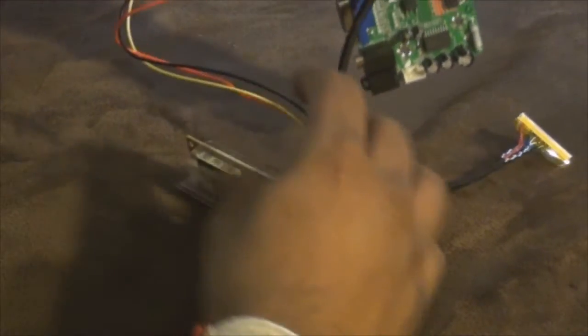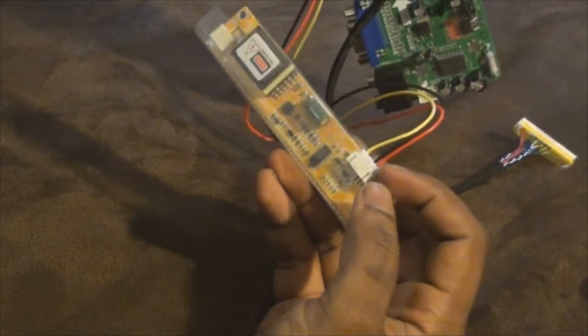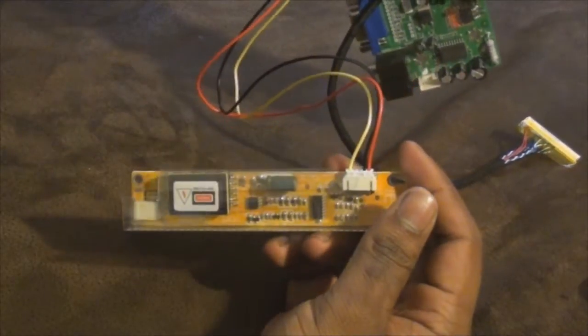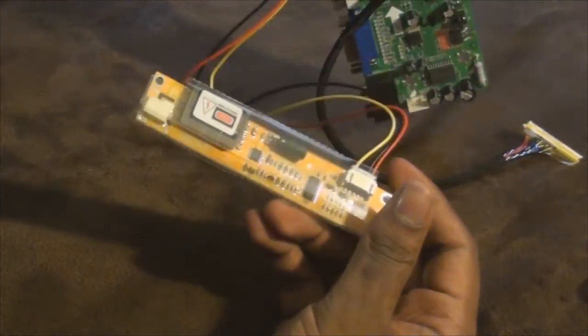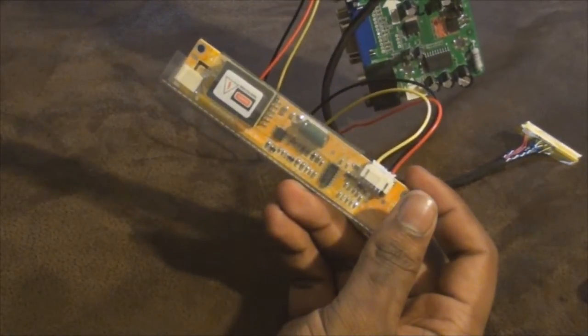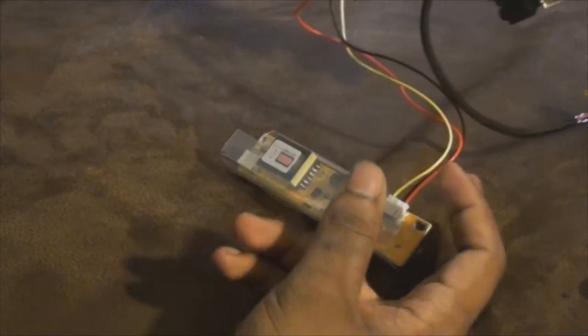Next you also get this which is actually an inverter board, and that's used just for the powering of your LCD to give it the power it needs. This also differs depending on which panel you have.